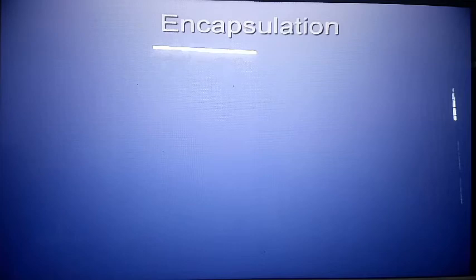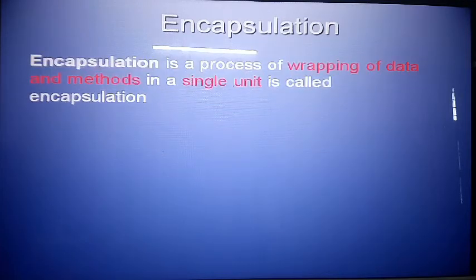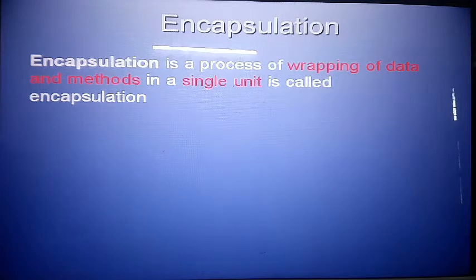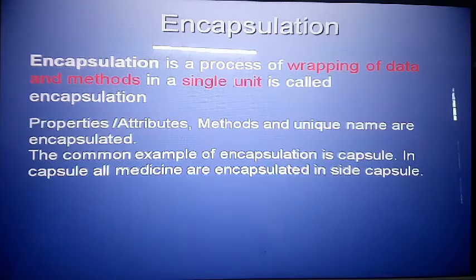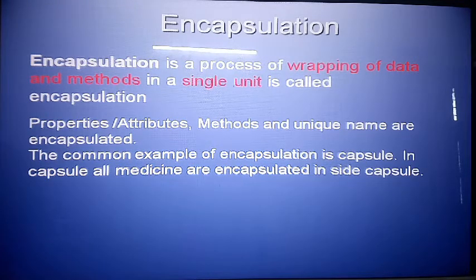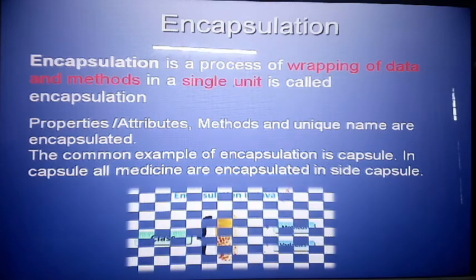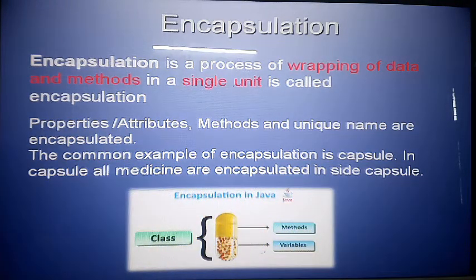The second important topic is encapsulation. Encapsulation is the process of wrapping data and methods into a single unit. Encapsulation is specially used for the security point of view — it gives security to data and methods. Properties, attributes, methods, and a unique name are all encapsulated, meaning covered or wrapped.